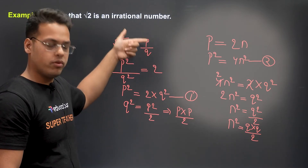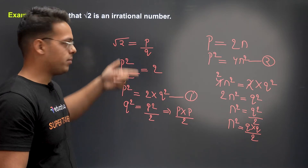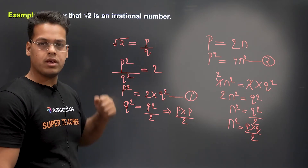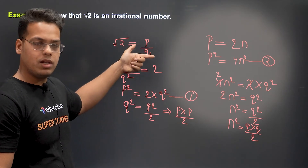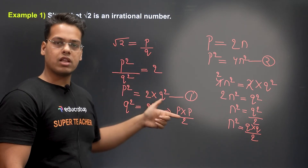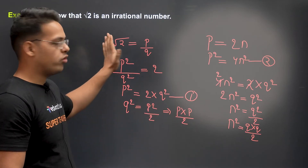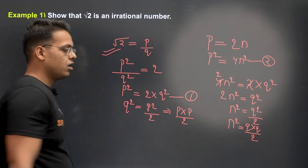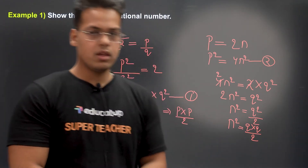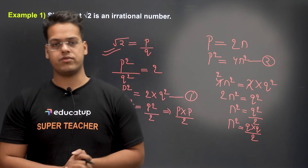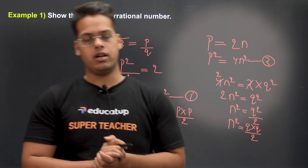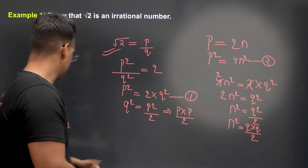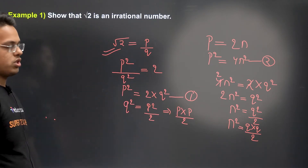So we have found a common factor of 2 in both P and Q. But we assumed P and Q were co-prime numbers with no common factor. This is a contradiction — we have a common factor of 2, which means our assumption was wrong. Therefore, root 2 is an irrational number.